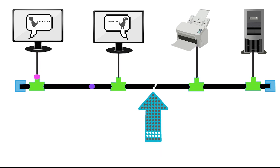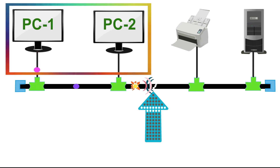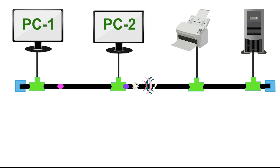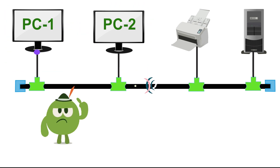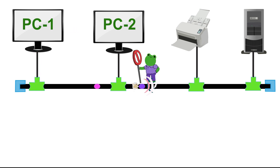There is one more thing to understand: a break in the cable brings the entire network down. For example, in this network, PC1 and PC2 are on the other side of the break. It looks like they can communicate, but they cannot. When any of these devices send signals, signals reach the break and bounce back, creating a collision. A cable break or loose terminator can bring the entire network down.